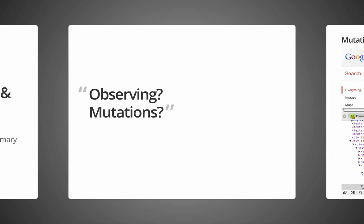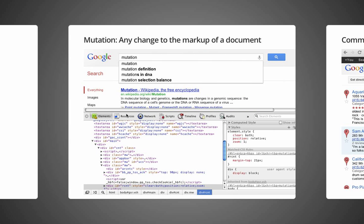Let's ask ourselves what do we mean by observing and what is it that we're observing? What are mutations? In this context, mutations are just changes — they're changes to the markup, the HTML, of a given page. Pages these days are pretty dynamic. They change a lot, and there are various reasons why we'd like to know when they change.